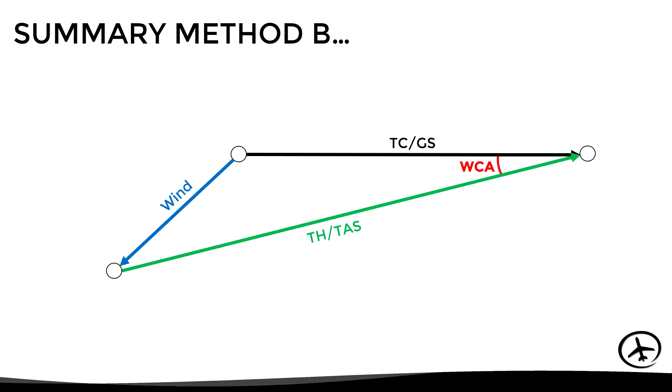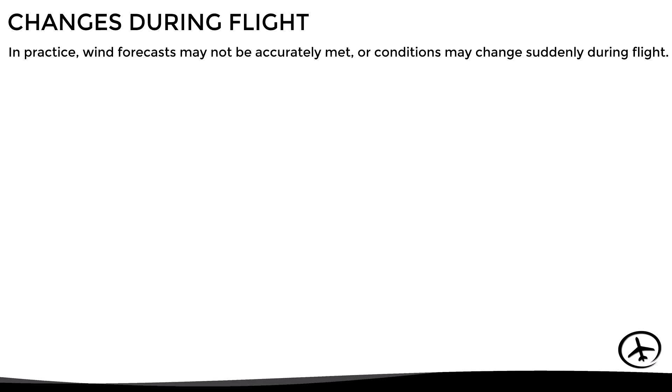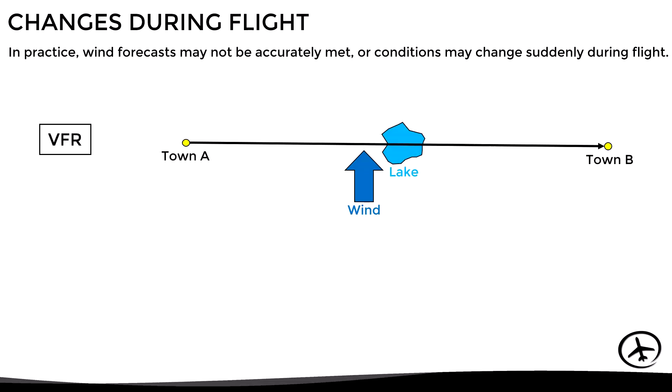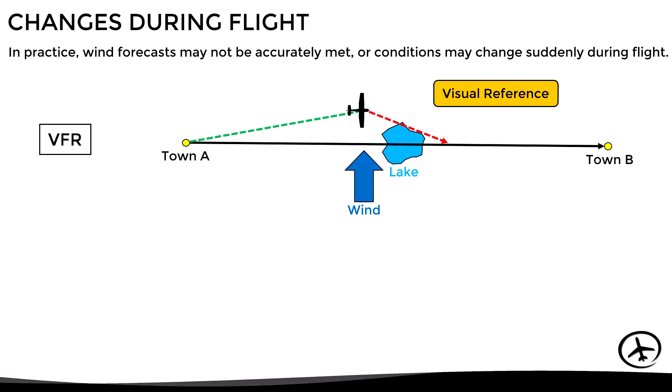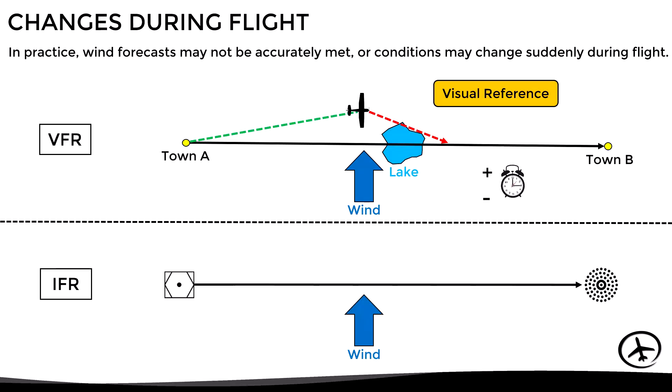Here we can see a summary of the triangle constructed using Method B. Although the results of both methods are practically the same, the focus used is different, so the choice between Method A and Method B depends on the type of problem to solve. Wind forecasts may not be accurately met or conditions may change suddenly during flight, so it is important to identify any deviation from the intended track and correct it. In VFR flights we can use visual references along the route to return to the desired track, and we must be aware that any change in the headwind or tailwind component will affect flight time.